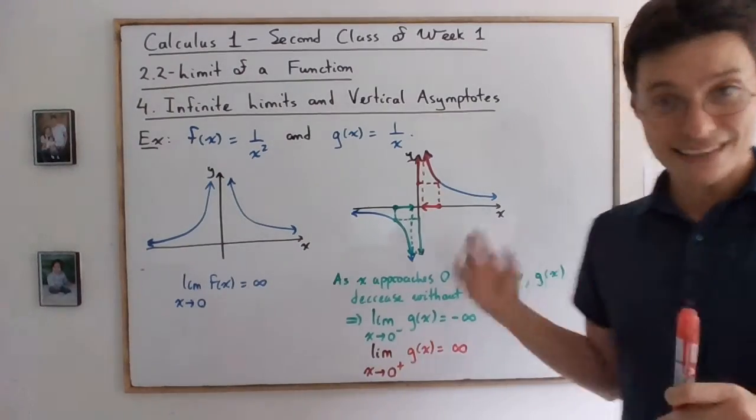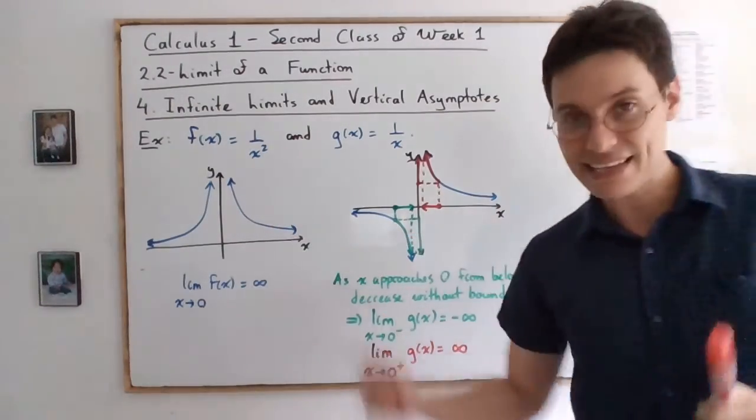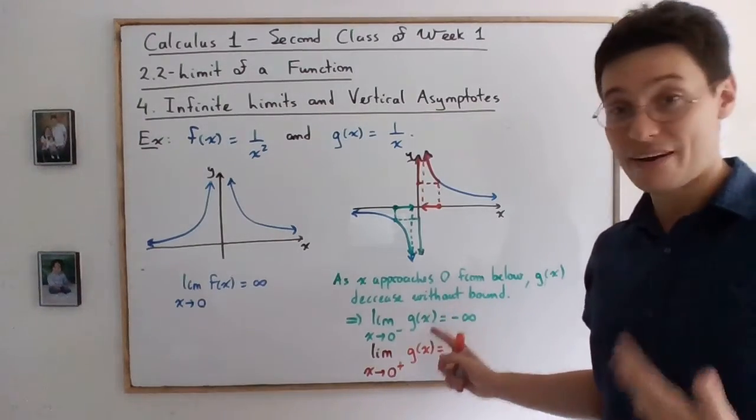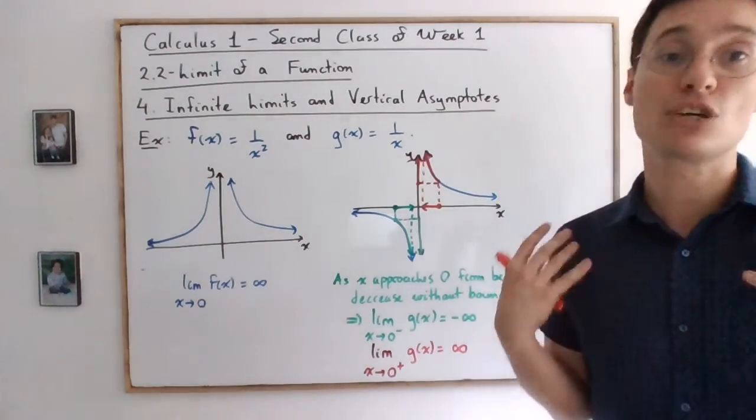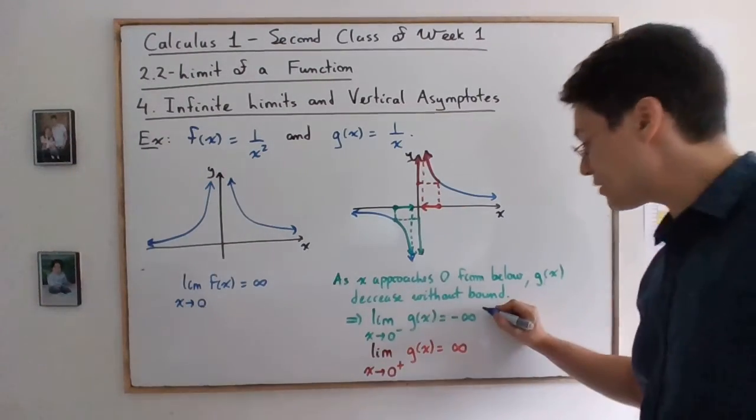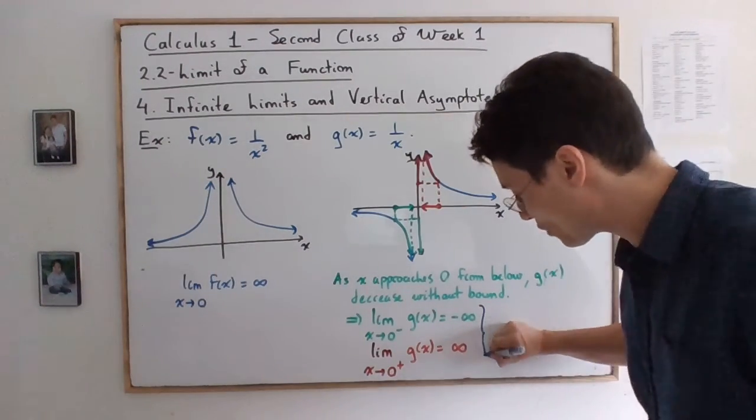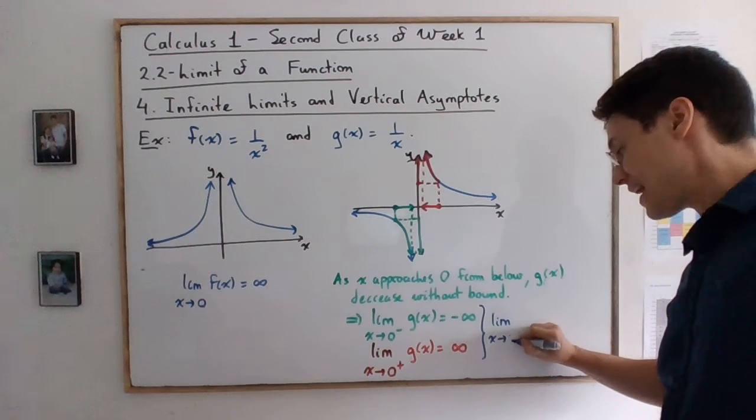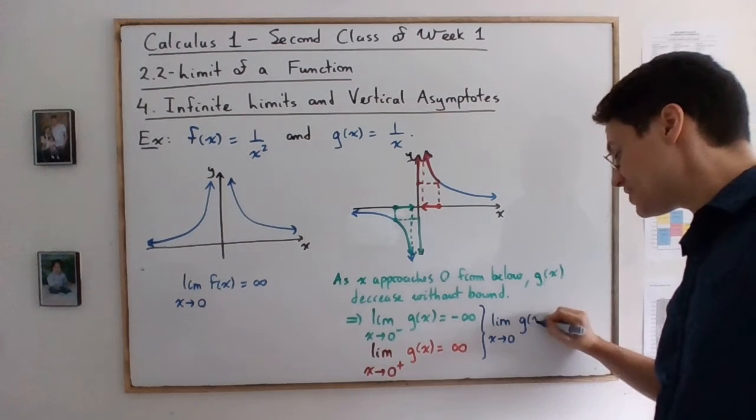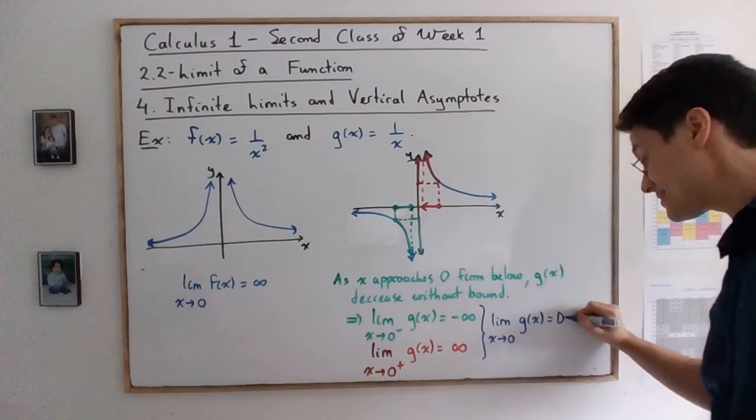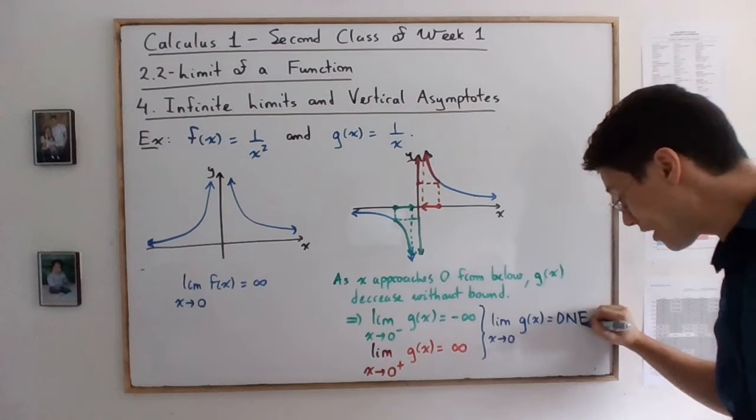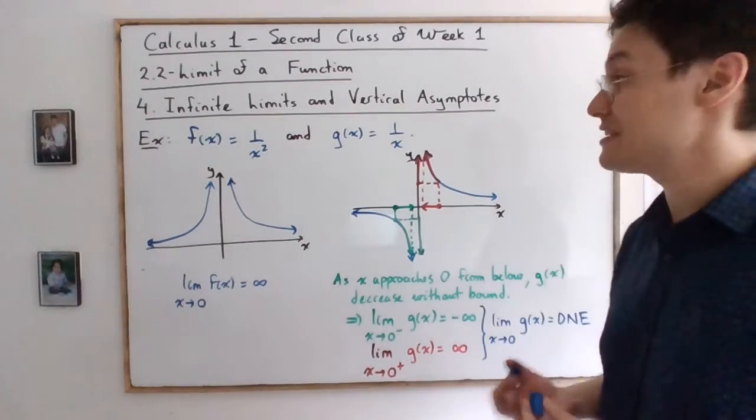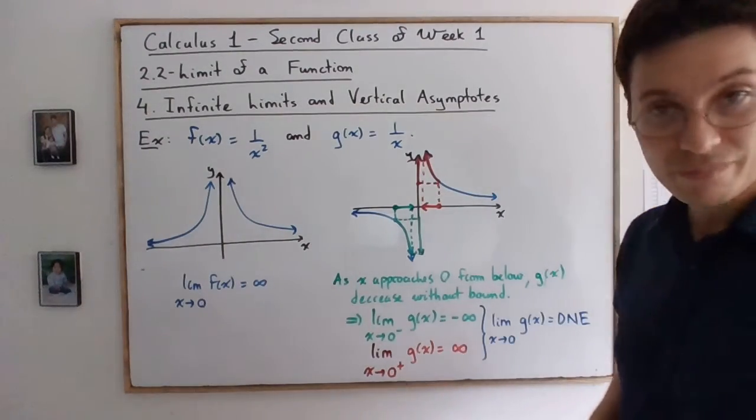So in this case, it's a little bit worse than that case. Because as you can see, both one-sided limits are infinite, but they do not correspond. So if you were to tell me what was the limit for this problem, you would have to say that the limit as x is approaching 0 of g(x) does not exist. In other words, you cannot even say that it's infinity or negative infinity.